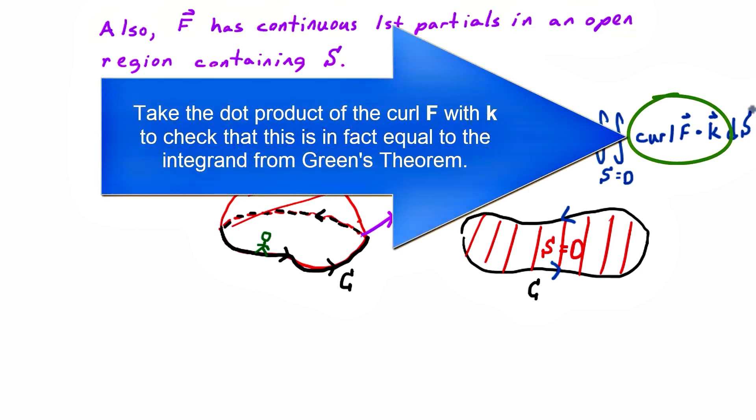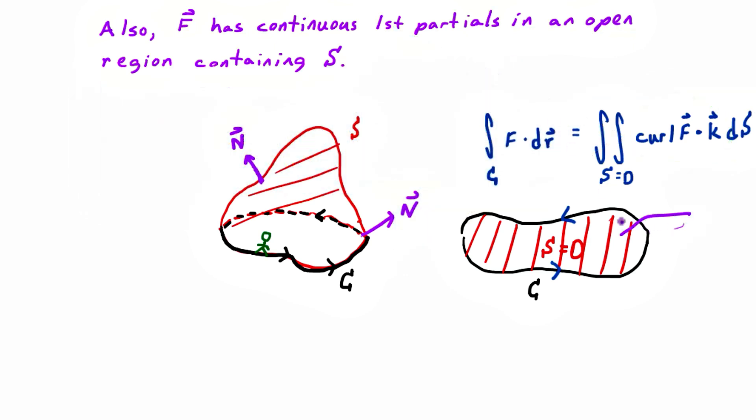So all we're really saying is if you warp S, so this surface here, in some reasonable way so that the surface remains smooth or piecewise smooth, and of course you don't do anything crazy with C, we're saying it'll still be true.